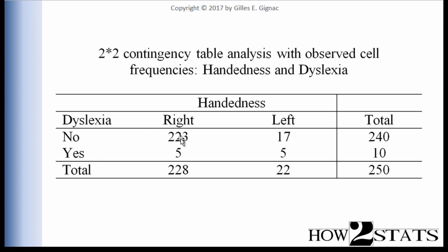We have 223 right-handers who did not have dyslexia, and five right-handers who did have dyslexia. For left-handers, 17 did not have dyslexia and five did. Those are the observed frequencies associated with the 2x2 contingency table analysis.